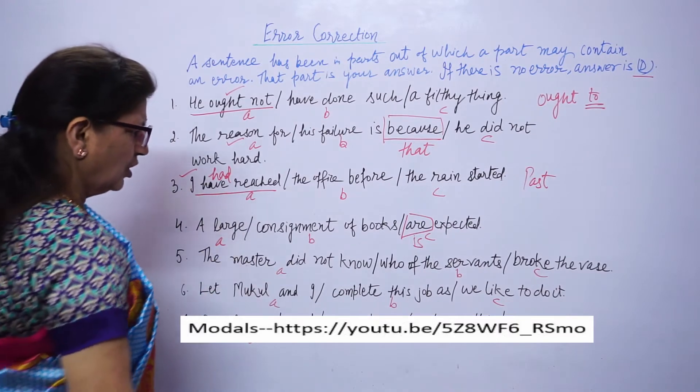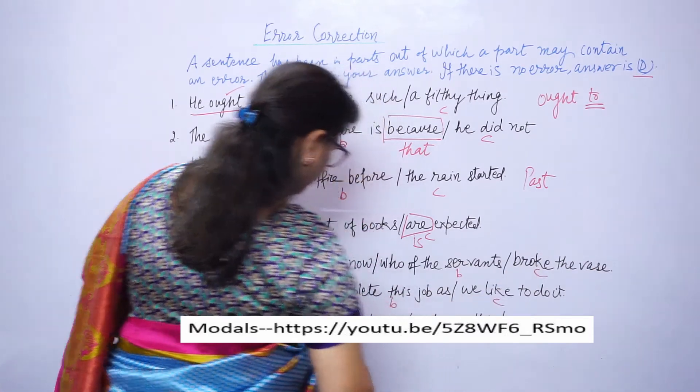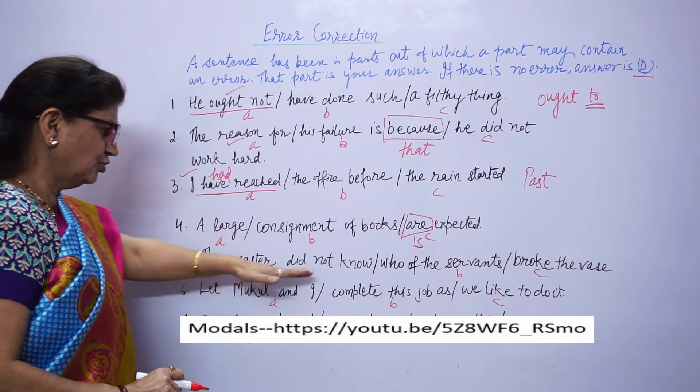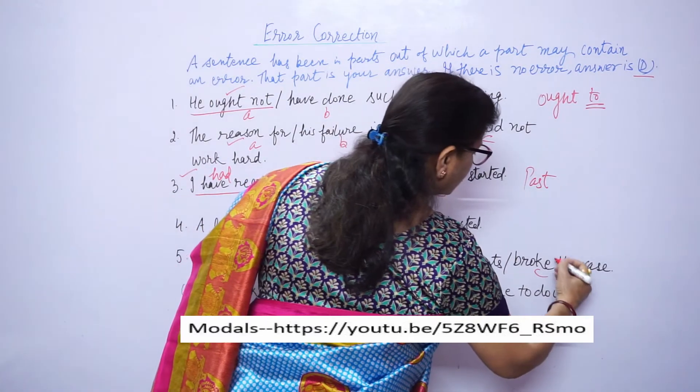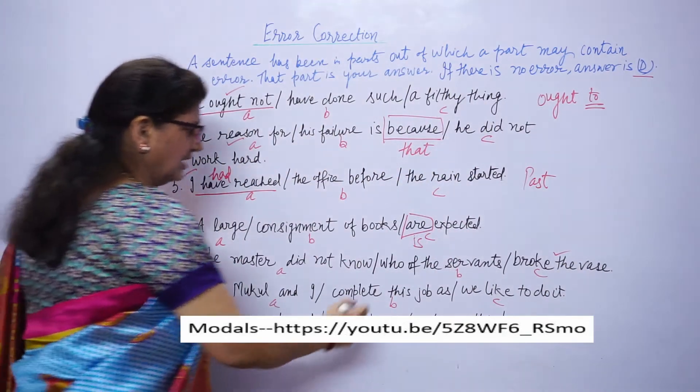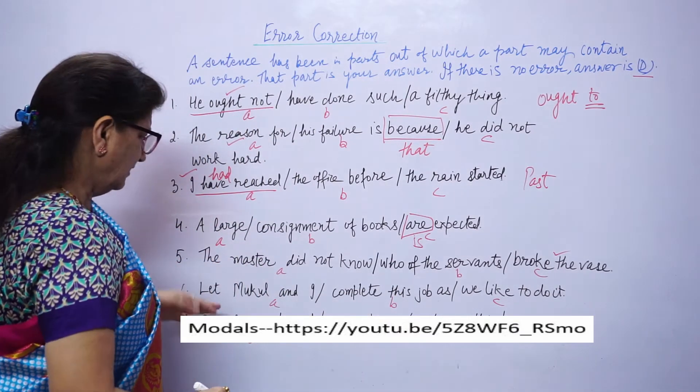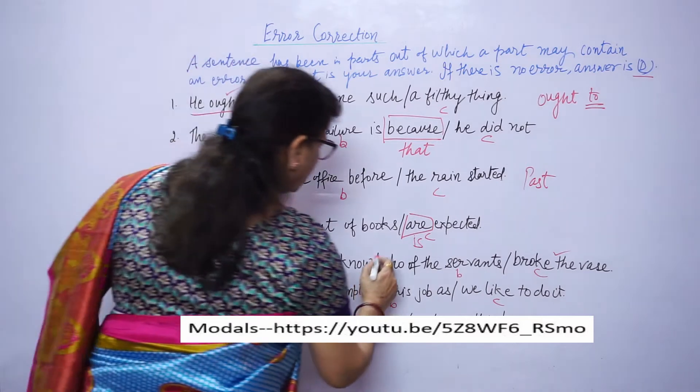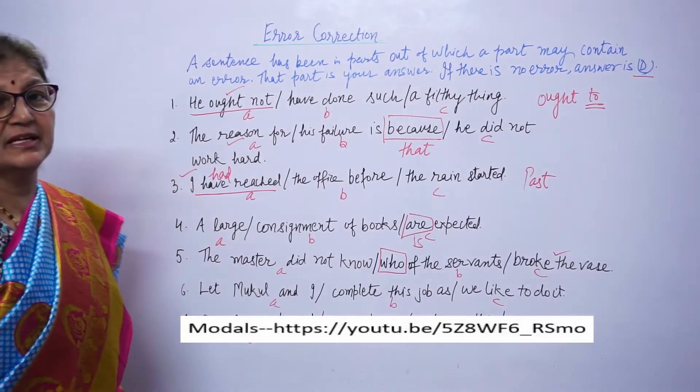The master did not know who of the servants broke the vase. A mistake seems to be here, who of the servants. Here, who is not correct. You should use which of the servants.